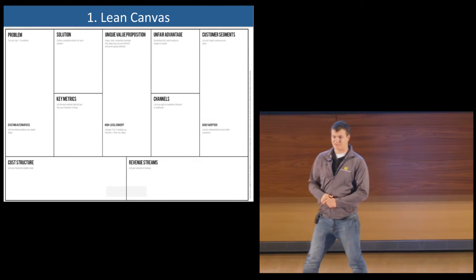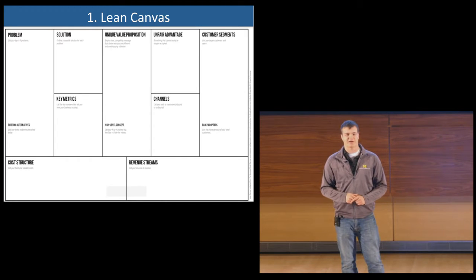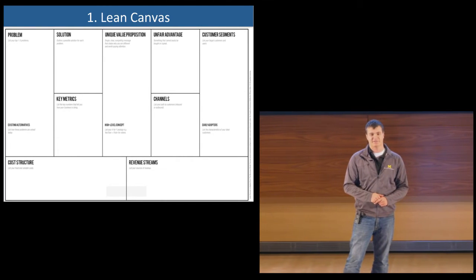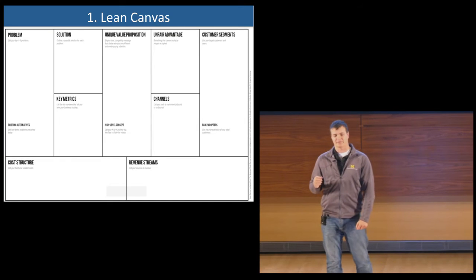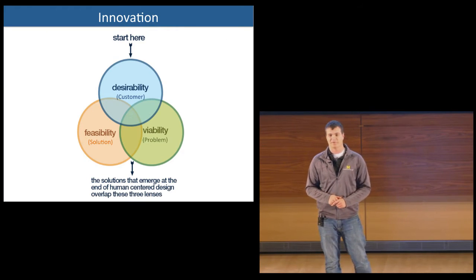There's a joke about a business plan that it's a 40-page document that investors make you write but never actually read. Instead, we want to use this one-page lean canvas to document our nine riskiest hypotheses so we can systematically test them one by one.